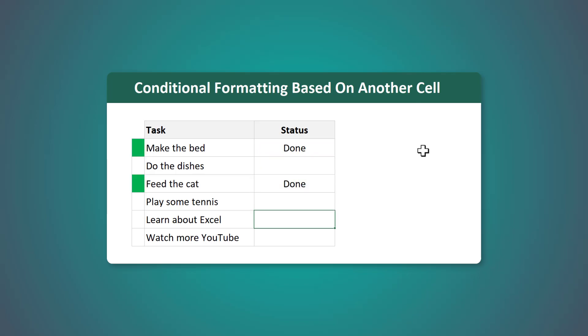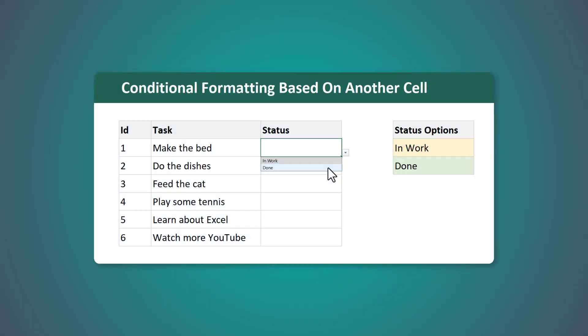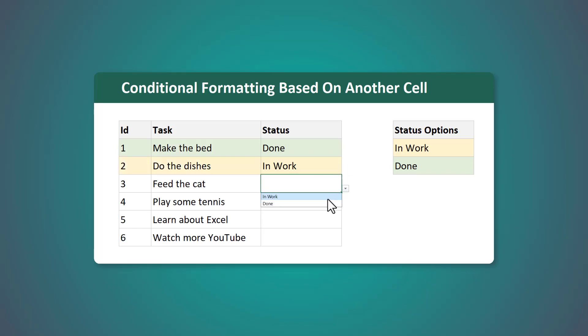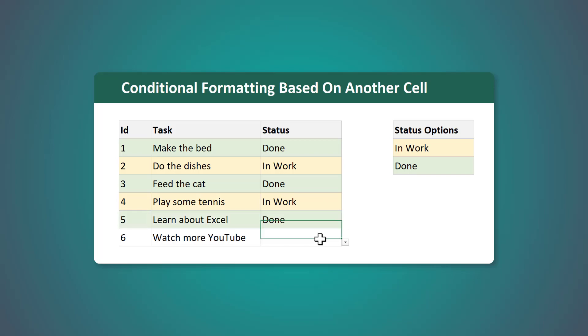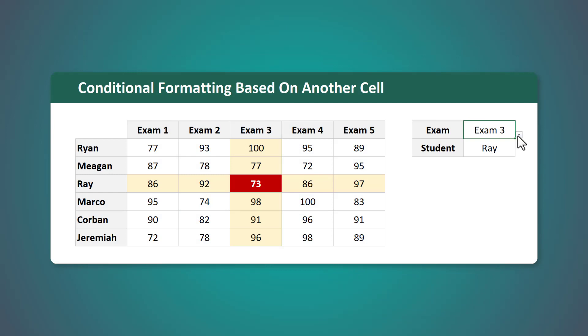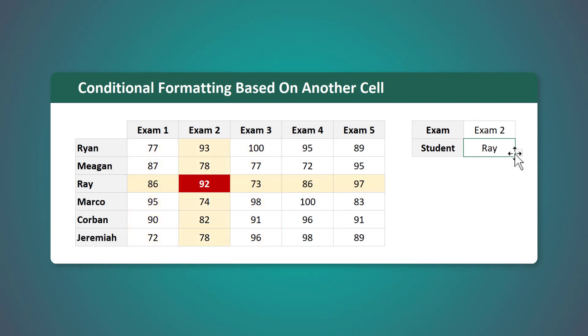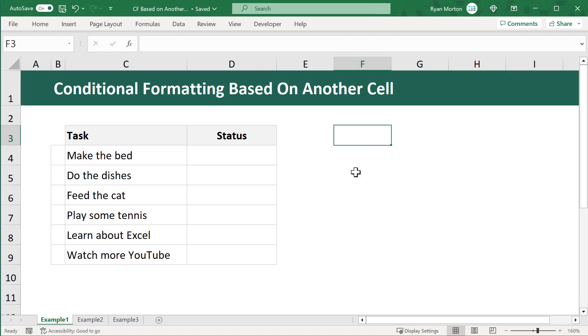For example one I will show you how to add conditional formatting to add color to one set of cells based on the values in another set of cells. For example two I will show you how to highlight the entire row based on the selected status for each task. And for example three I will show you how to create a crosshair effect based on the selected exam and student.